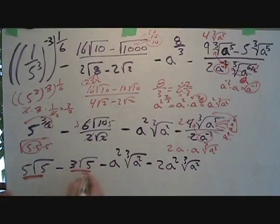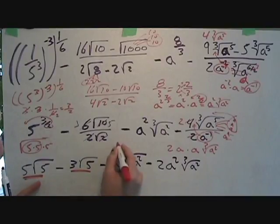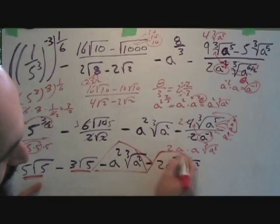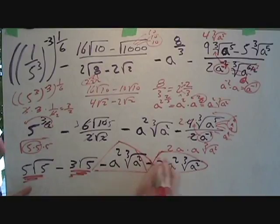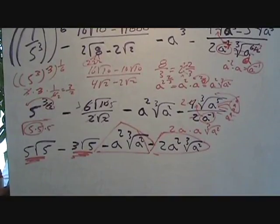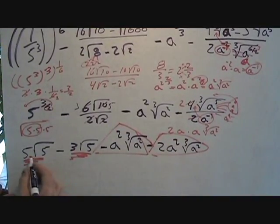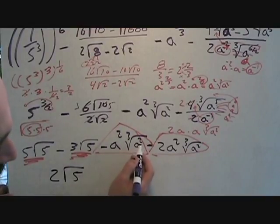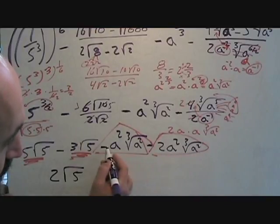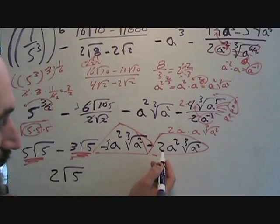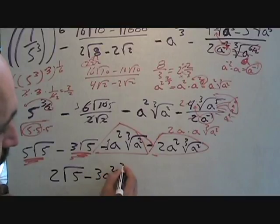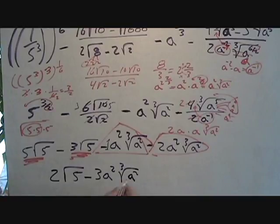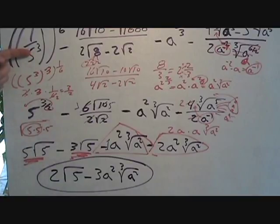You've got the cube root of a² with two a's left inside the radical, so a times a is a², giving 2a² cube root of a². Now we can combine like terms. I use different symbols — underlines, circles, triangles, boxes — to group different like terms. Five √5 minus 3√5 is 2√5. For the cube root of a² terms: negative a² cube root of a² minus 2a² cube root of a² — negative one minus two is negative three — giving negative 3a² cube root of a². That is our final solution.